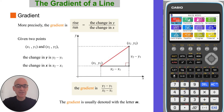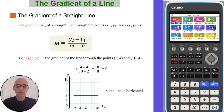The gradient is y2 minus y1 over x2 minus x1, and is usually denoted with the letter m. The formula for the gradient m of a straight line through the points (x1, y1) and (x2, y2), as given on page 5 of your formula booklet, is shown here.